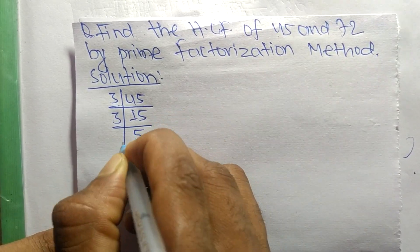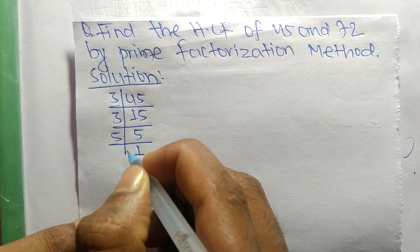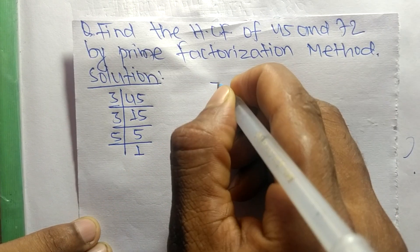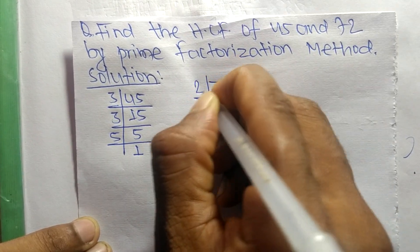Then 5 times 1 equals 5. Now, the prime factors of 72 are as follows.